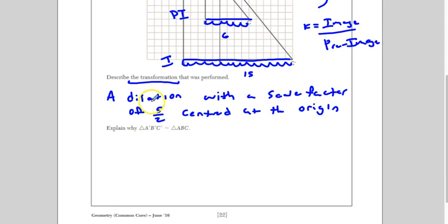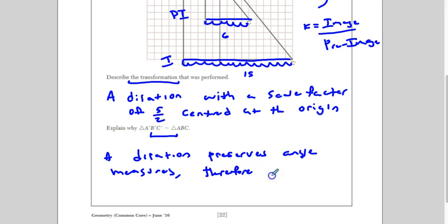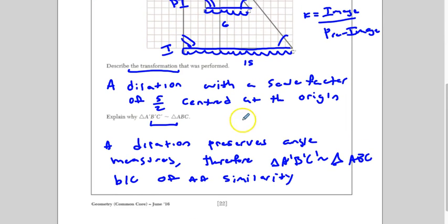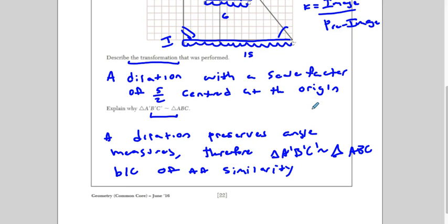And this is really just talking about the properties of dilations. And to prove that they're similar, you could just say this. Because a dilation preserves angle measures, therefore, triangle A prime, B prime, C prime is similar to triangle ABC because of angle-angle similarity. All right? And we know that C is going to be congruent to C. We know B is congruent to B. So, since the angle measures are preserved, we know that it's going to be similar because of the angle-angle.